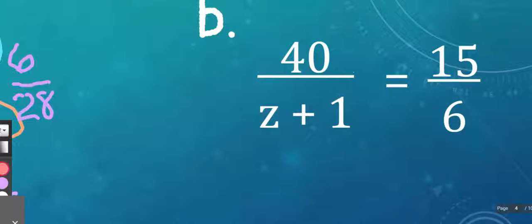Part B says 40 over Z plus 1 is equal to 15 over 6. So this does have something that looks kind of funny right here, this Z plus 1. But don't let that trip you up too much, and I'll show you how to navigate that.